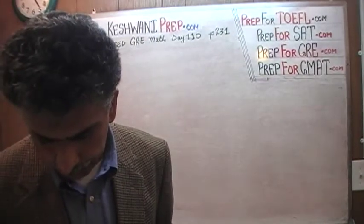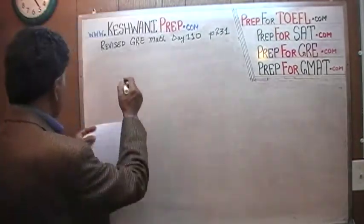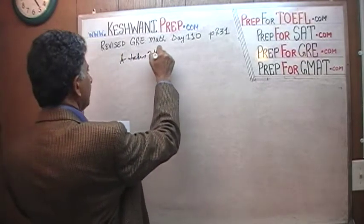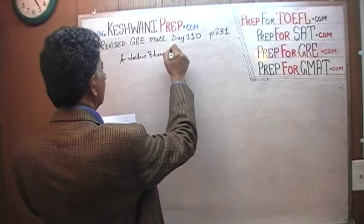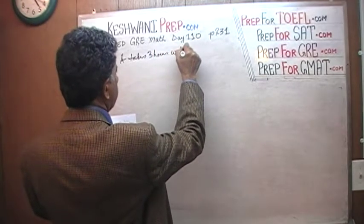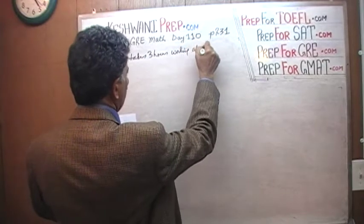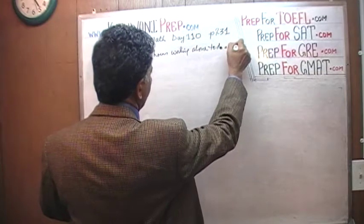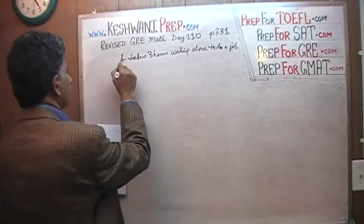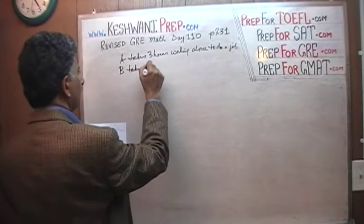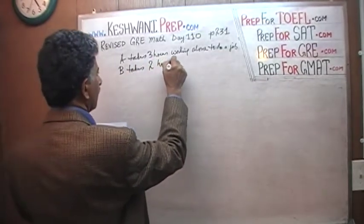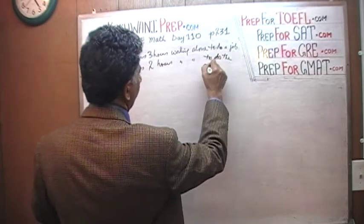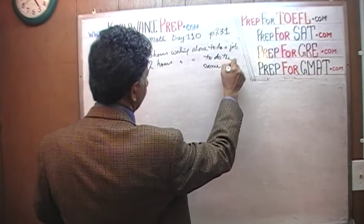It says we have two machines, machine A and machine B. We are told that A takes three hours working alone to do a job, and B takes two hours working alone to do the same job.